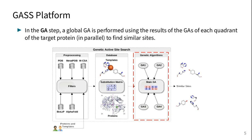In the GAS step, a global genetic algorithm is performed using the results of GAS of each quadrant of the target protein to find similar sites.